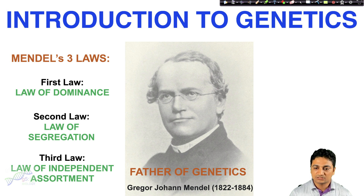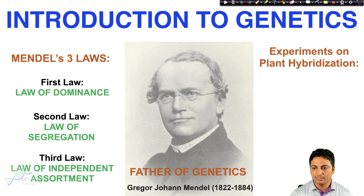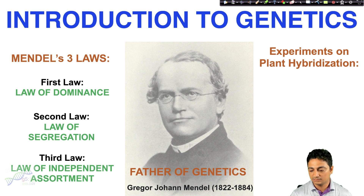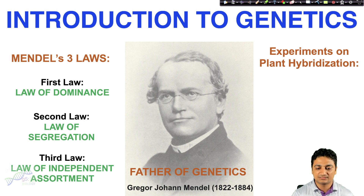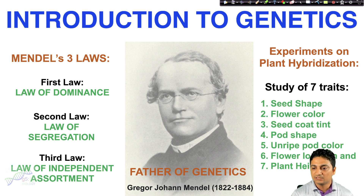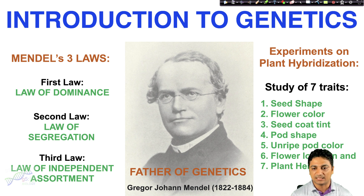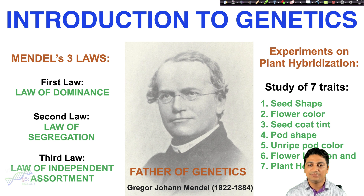Mendel worked on the breeding of peas, and he did his experiments in plant hybridization. He used pea plants and crossed different types of peas to propose a new hypothesis on genetics. Based on his crossing, he studied seven different traits: shape of the seed, color of the flower, seed coat tint, shape of the pod, unripe pod color, flower location, and height of the plant. He cultivated many peas in his garden and gave us three different laws.